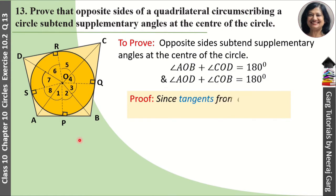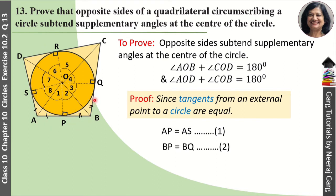We know that tangents from an external point of a circle are equal. That's why AP equals AS, since both are tangents from point A. Similarly, BP equals BQ, CQ equals CR, and DS equals DR.